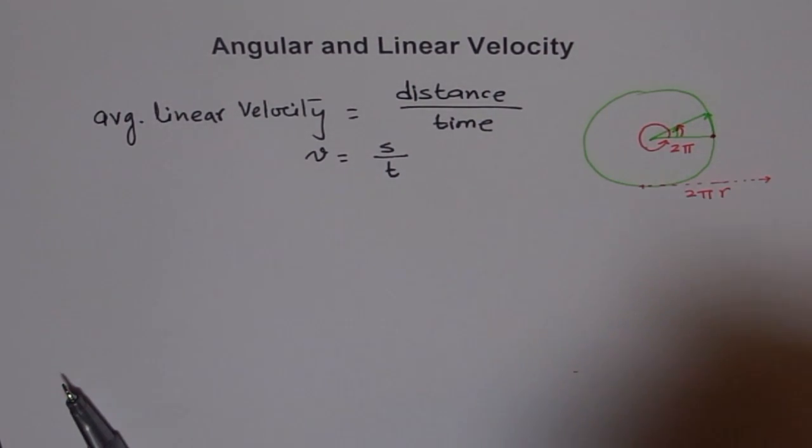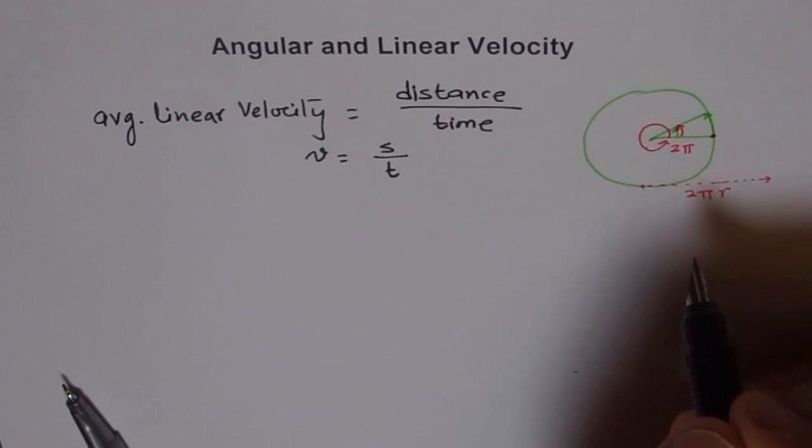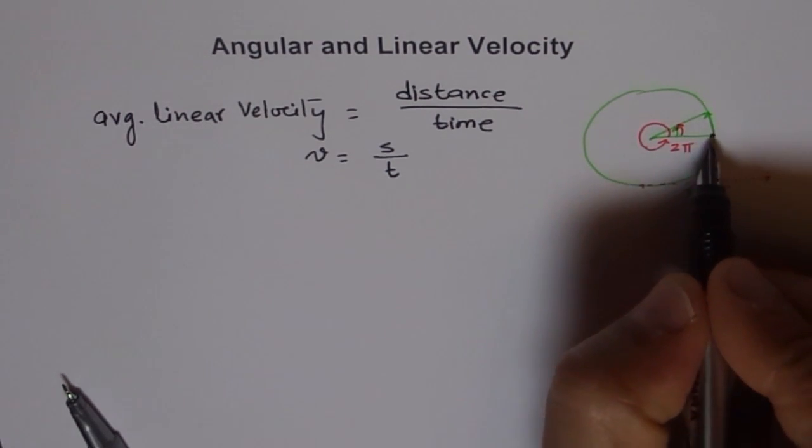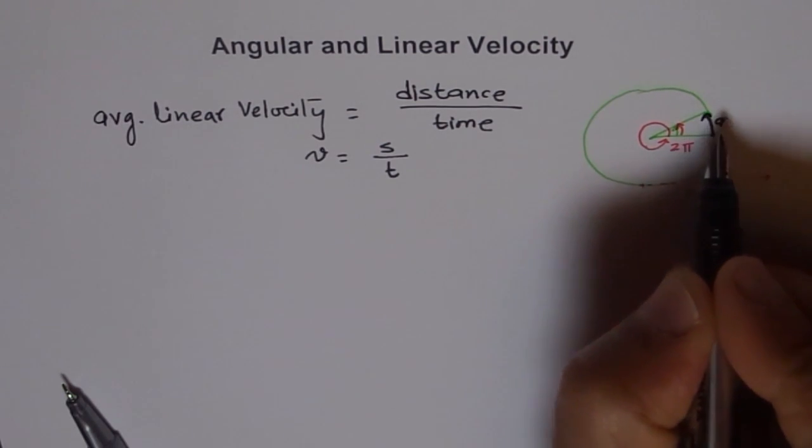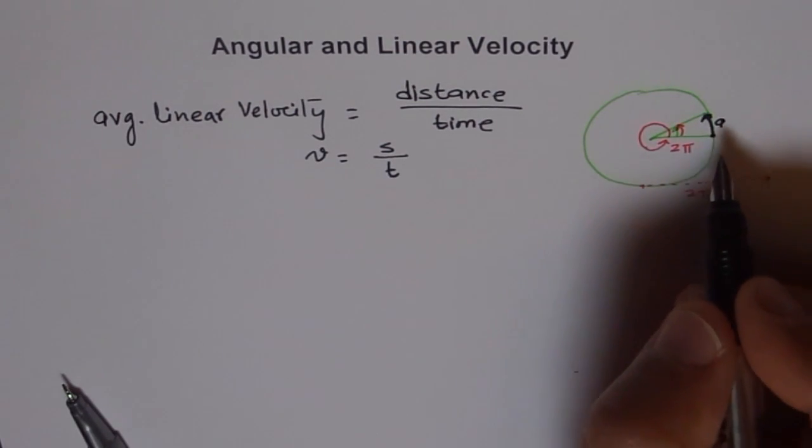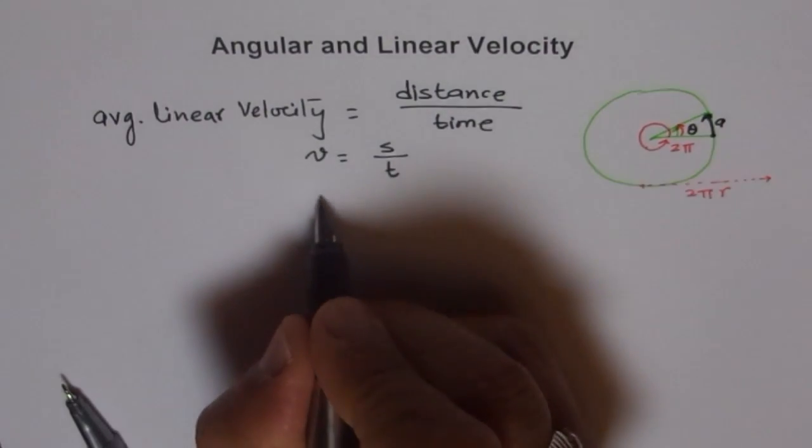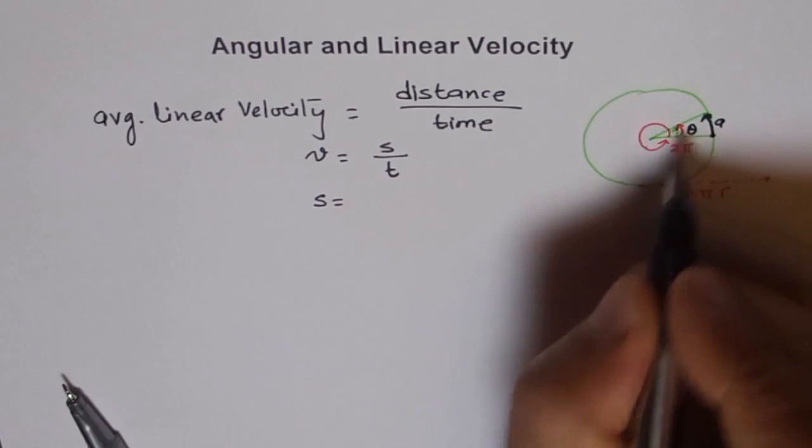Now, if the object is moving along a circular path, at a constant speed, then it travels along an arc. Distance travelled is r times θ. If this is my angle θ, I can write this distance travelled as r times θ.